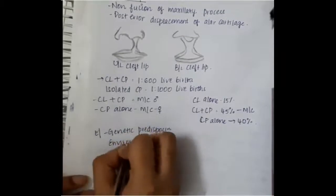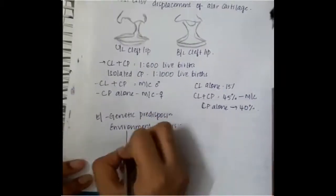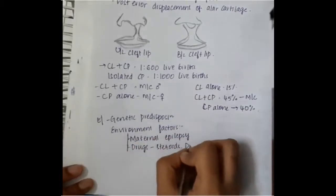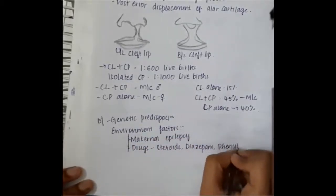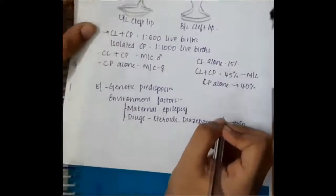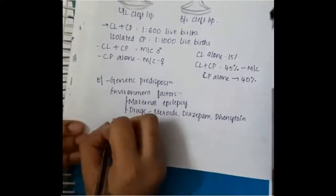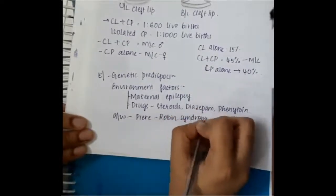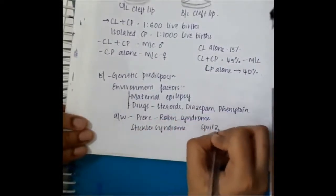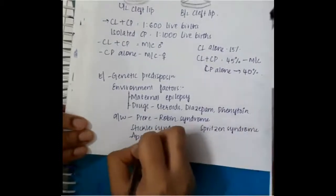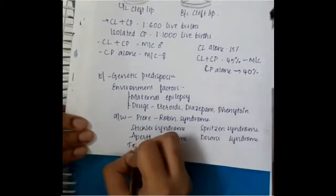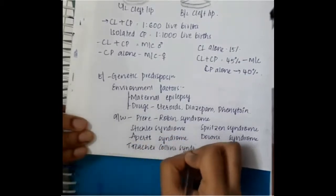Etiology includes genetic predisposition. Environmental factors like maternal epilepsy, drugs like steroids, diazepam, and phenytoin are associated with cleft lip and cleft palate. It is also associated with certain syndromes like Pierre Robin syndrome, Stickler syndrome, Apert syndrome, Pfeiffer syndrome, Down syndrome, and Treacher Collins syndrome. In all these syndromes cleft lip or cleft palate is associated.